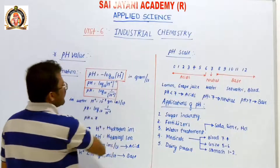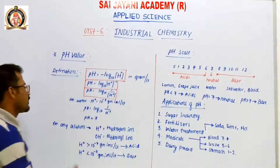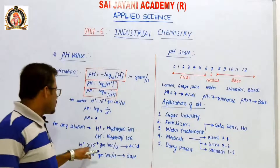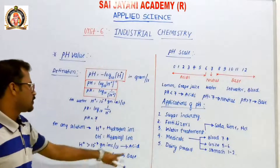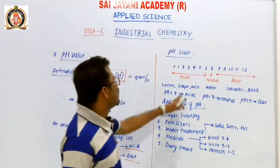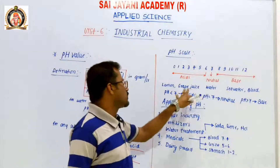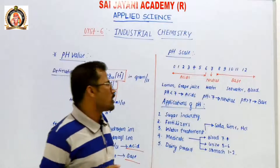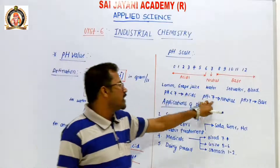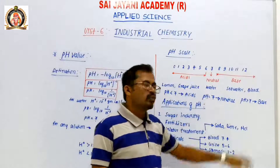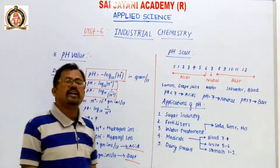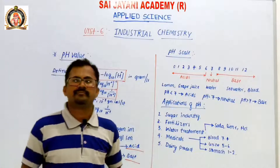To summarize: for any solution, if H⁺ ion concentration is more than 10 to the power minus 7 gram ions per liter, the solution is an acid. If less, the solution is a base. Examples of acids: lemon juice, grape juice. Example of neutral solution: water. pH less than 7 — acids; exactly 7 — neutral; more than 7 — base. Applications: sugar industry, fertilizers, water treatment, medical field, and dairy products. These are all about pH. Thank you.